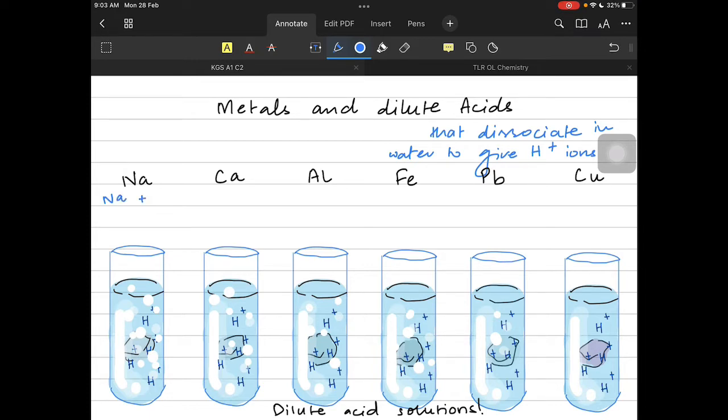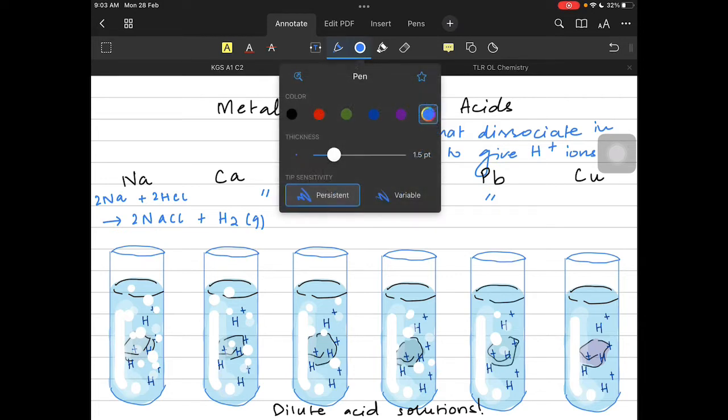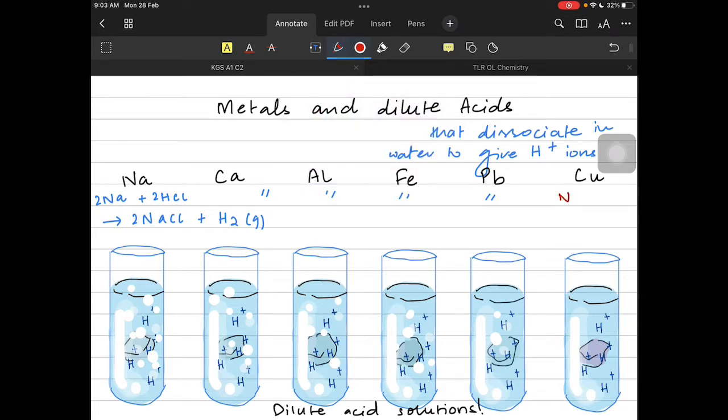This time even aluminum, iron, and even lead are going to give the bubbles. Copper still isn't giving any bubbling. So this time they are reacting in a better way. Sodium reacted with the dilute, let's suppose hydrochloric acid, to produce sodium chloride and hydrogen gas.